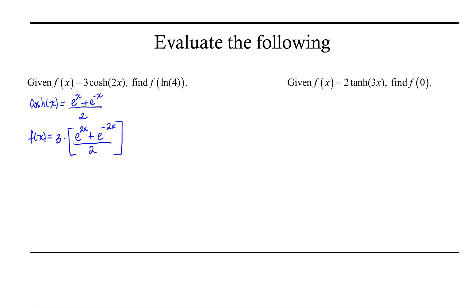So that's our function f of x, and now we want to evaluate that at the natural log of 4. So f of the natural log of 4 would be 3 times e to the 2 times natural log of 4 plus e to the negative 2 times natural log of 4, all divided by 2.